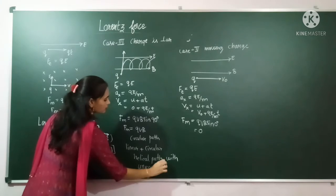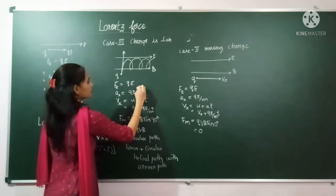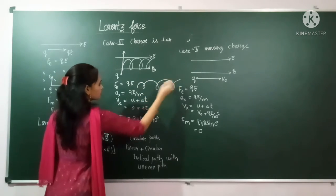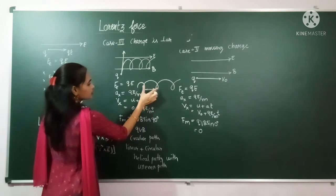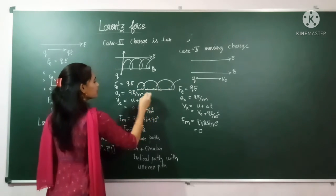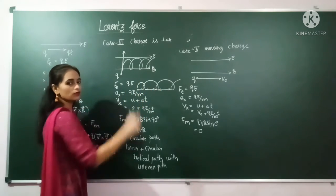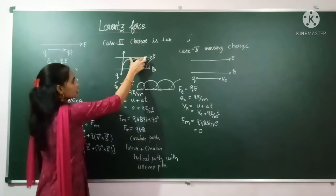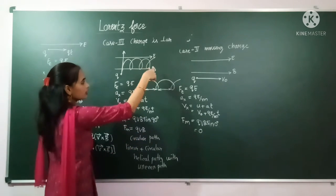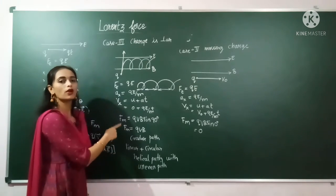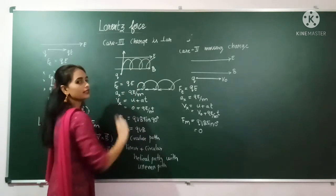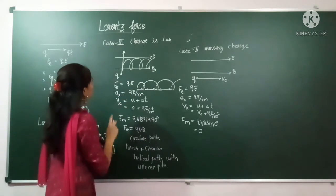The charge moves in a linear direction due to the electric force and in a circular path due to the magnetic force. The combination of linear and circular motion gives a helical path with uneven pitch. The pitch increases because the electric field continuously increases the velocity of the charge in the linear direction. The magnetic force does not increase velocity — it only changes direction.